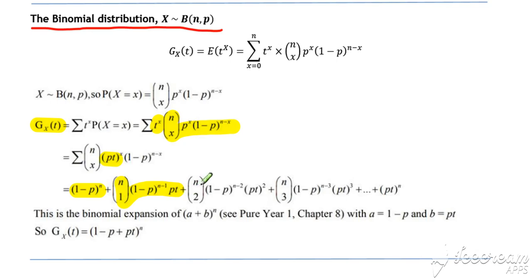Term by term binomial expansion. We recognize this is the binomial expansion of (a+b)^n where a is (1-p) and b is equal to pt. So we get our probability generating function - you can replace (1-p) by q in there also.